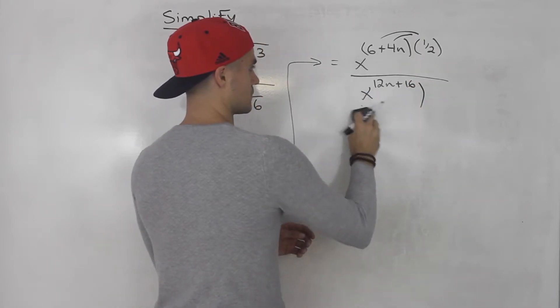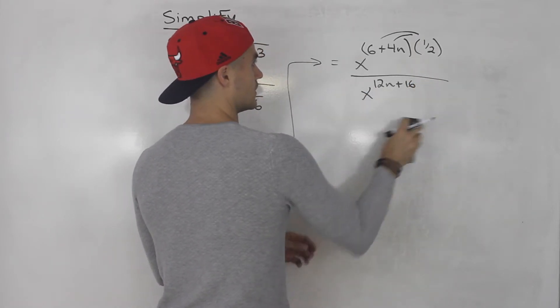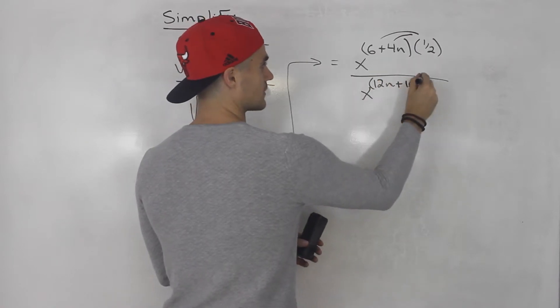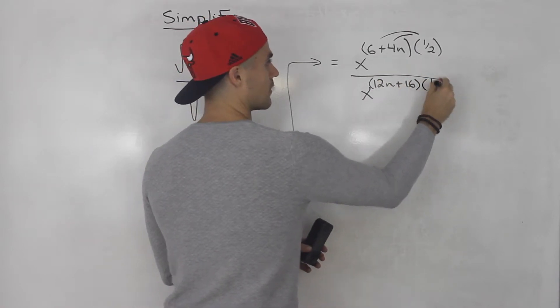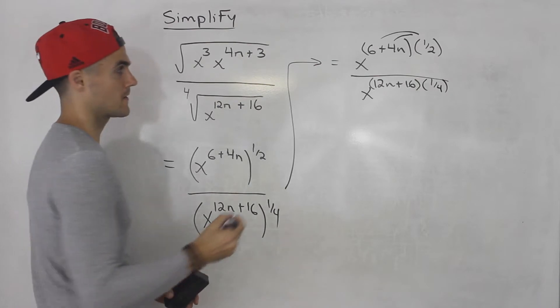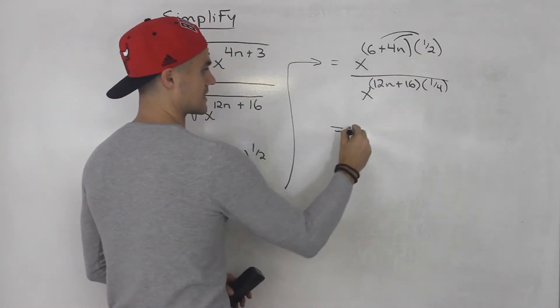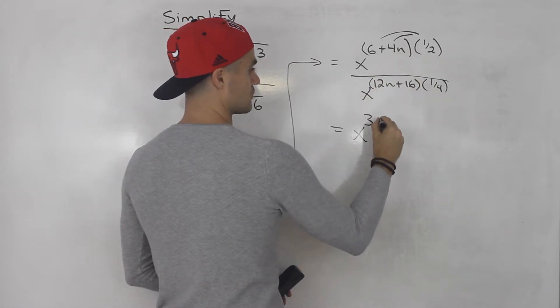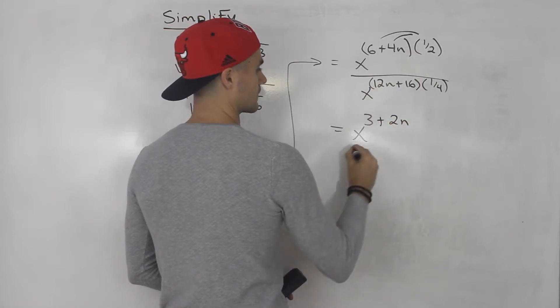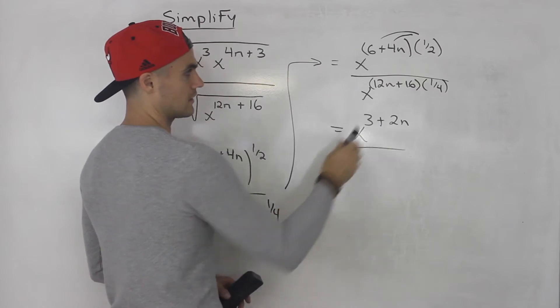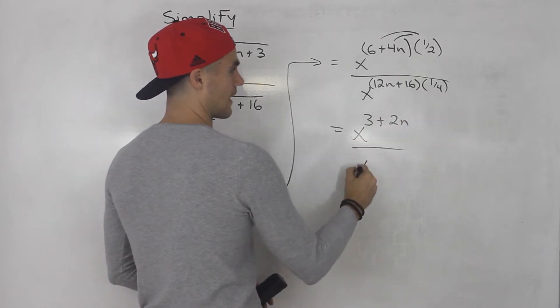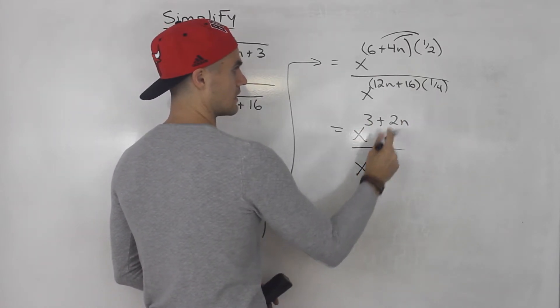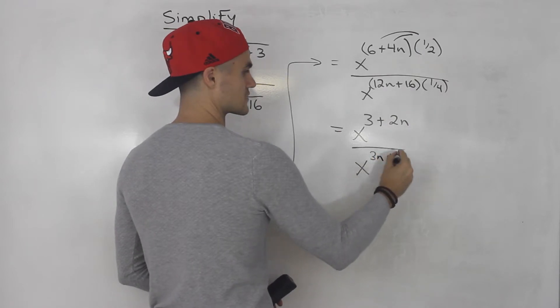So that entire exponent there is going to be multiplied by 1 over 4. So here 1 over 2 times 6 gives us 3, and then 4n times 1 over 2 gives us 2n. And then here 1 over 4 times 12n gives us 3n, and then 16 times 1 over 4 gives us 4.